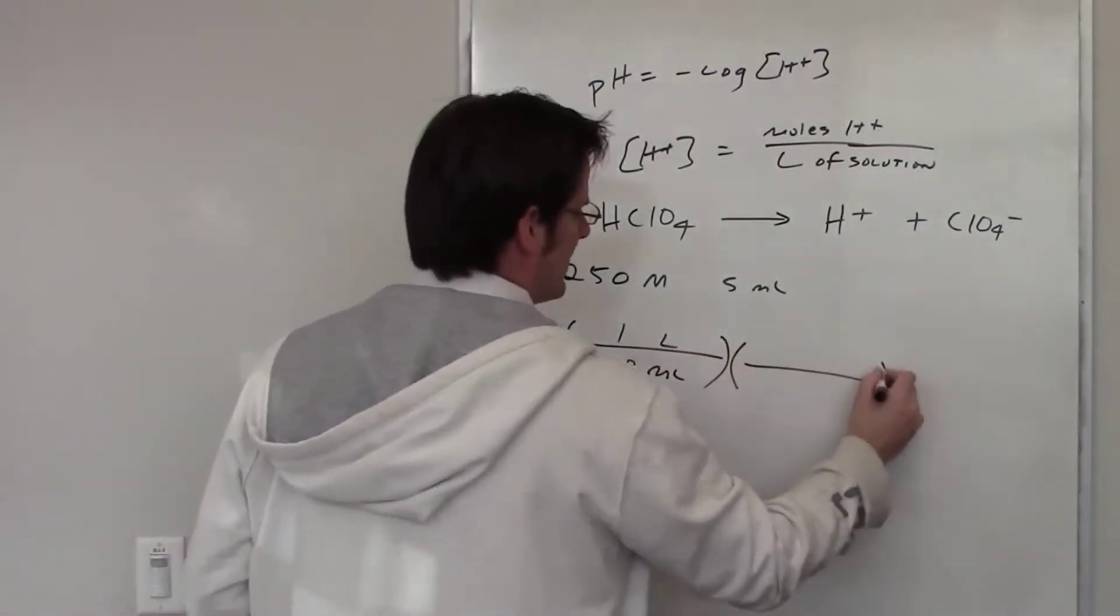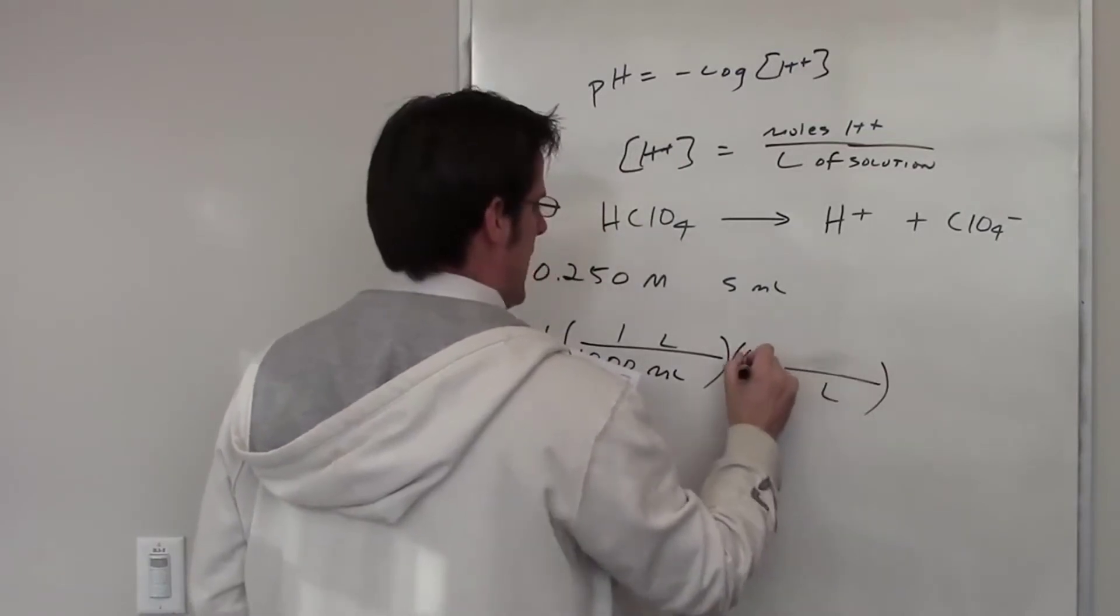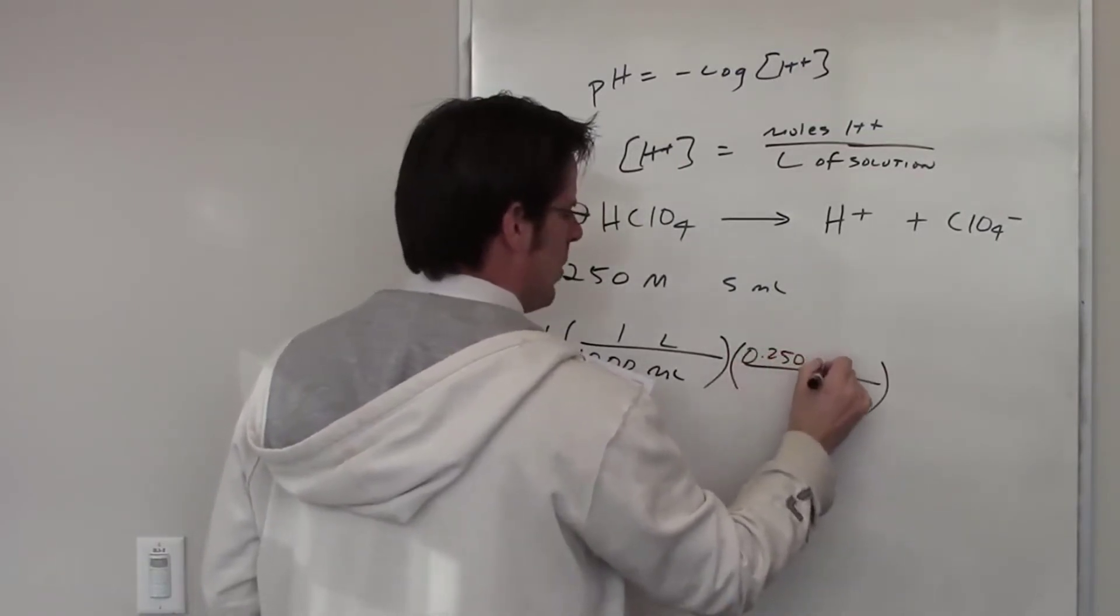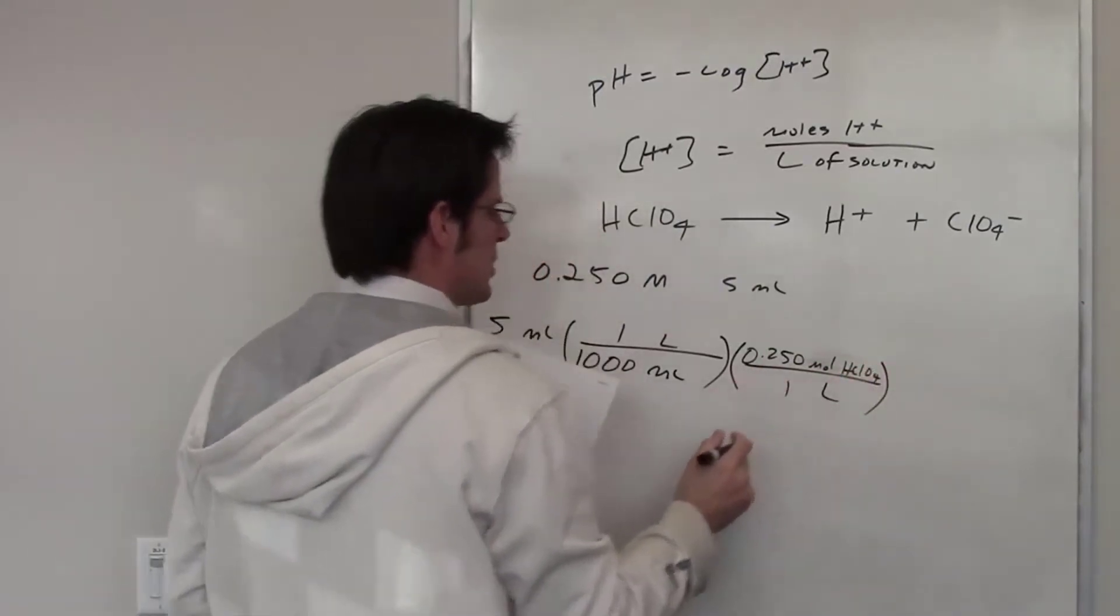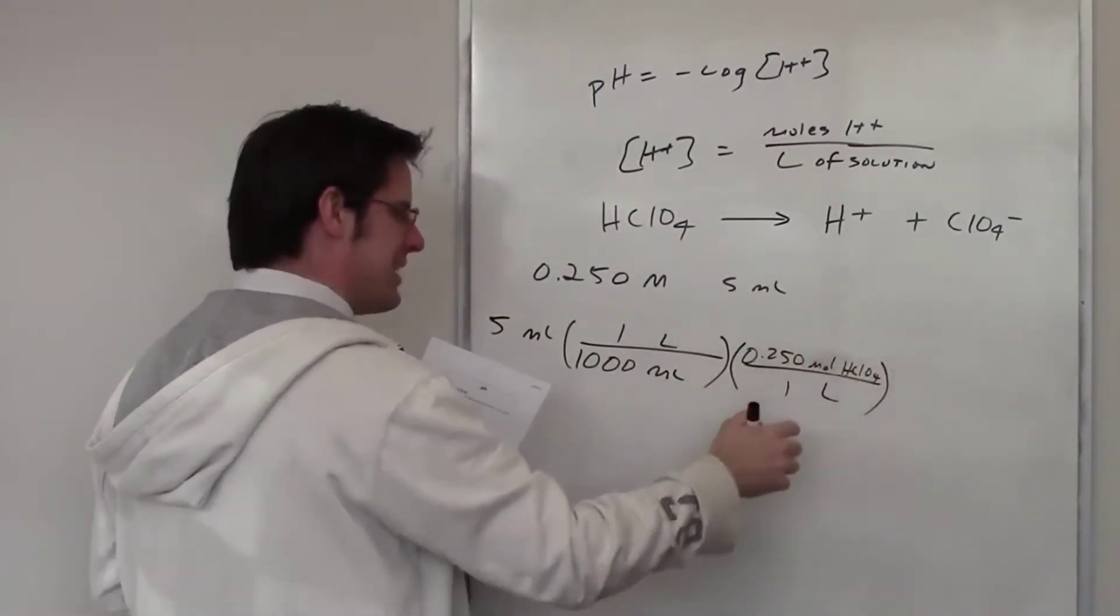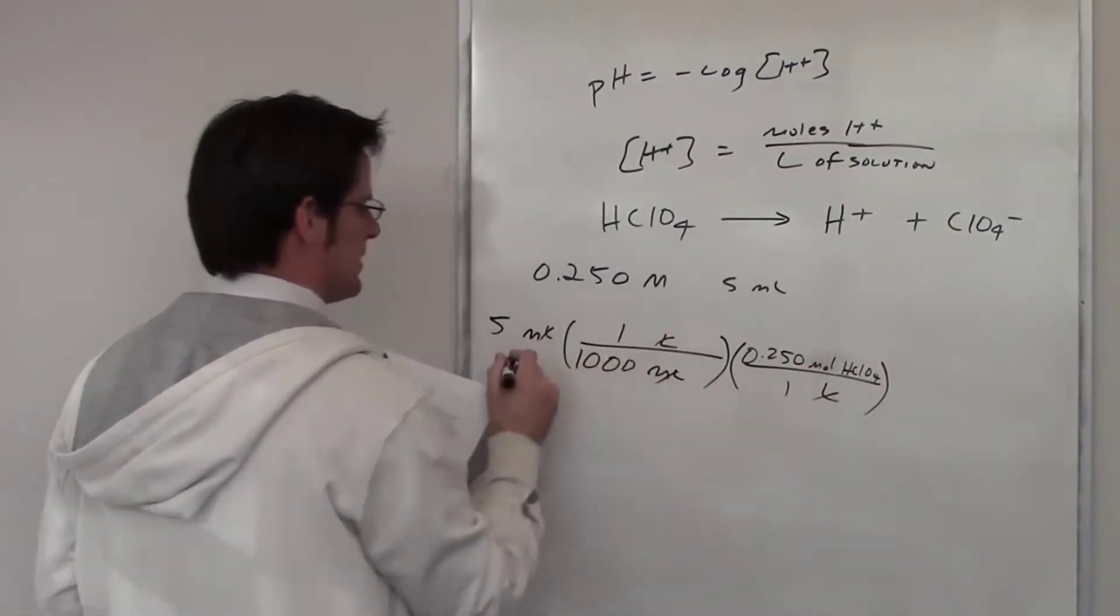Now what? Well, I want to get to moles of H+, so I'll go ahead and write down liters in the denominator and .250 moles of HClO4. In this solution, I've got .250 moles of HClO4 in one liter of the solution. The liters cancel each other out. The mils cancel each other out.